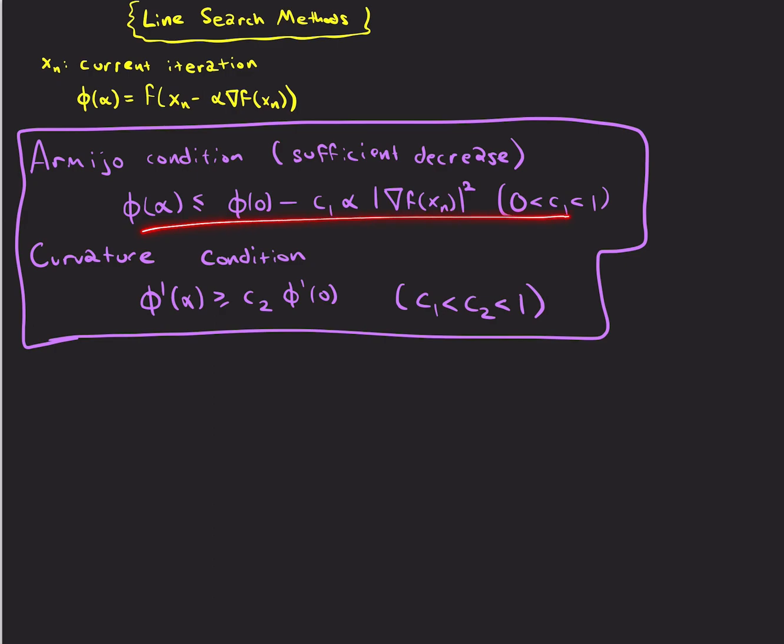And these are those repeated, so Armijo means sufficient decrease of the function. This is φ(α) is less than or equal to φ(0), minus some constant that you set times the step length times the gradient squared.